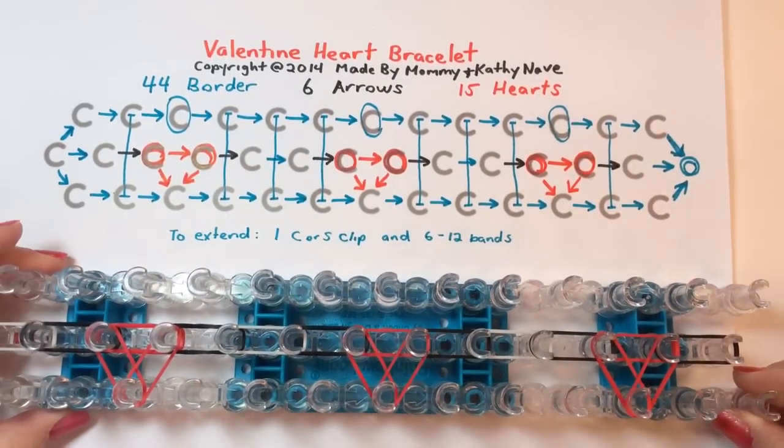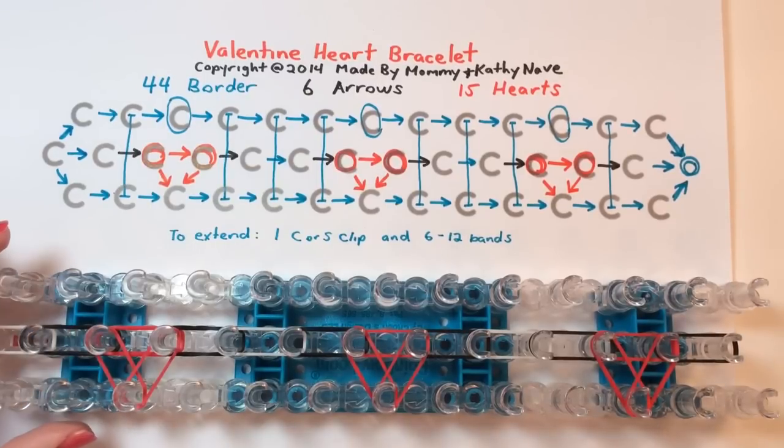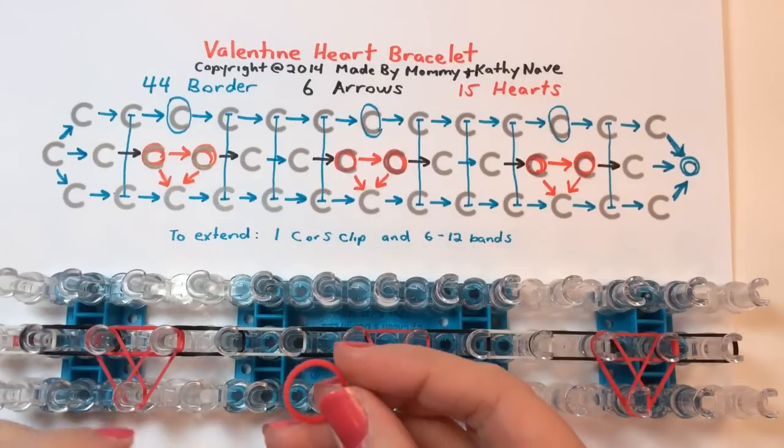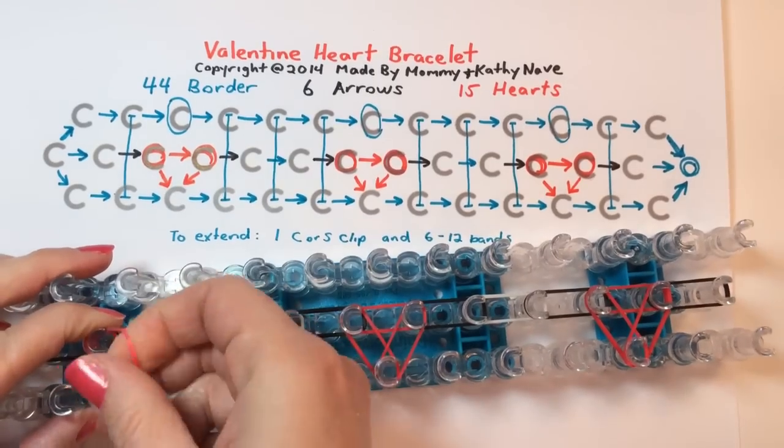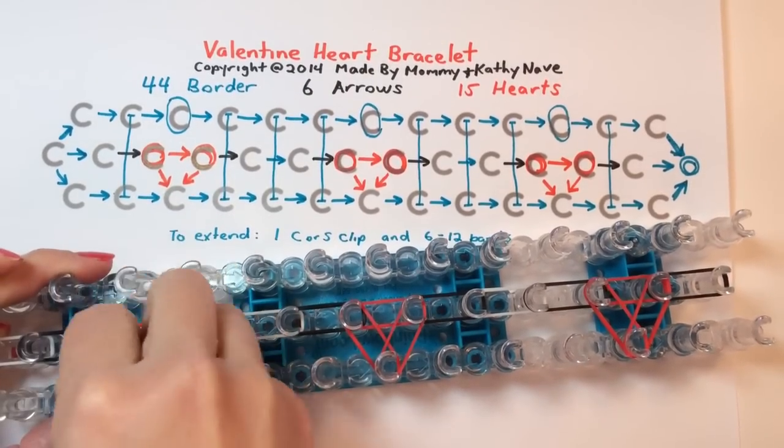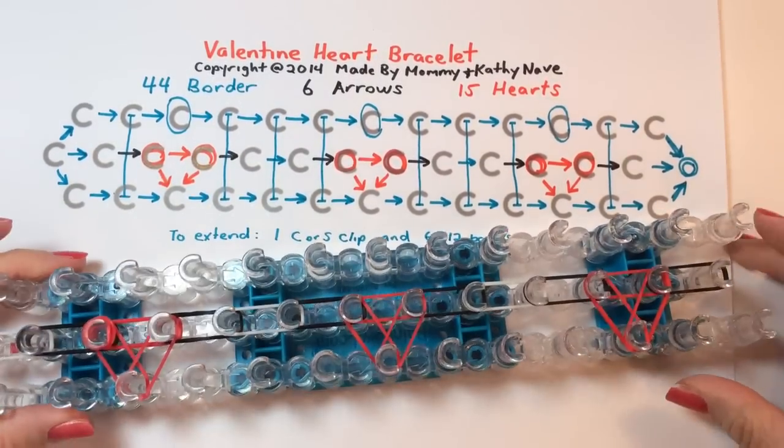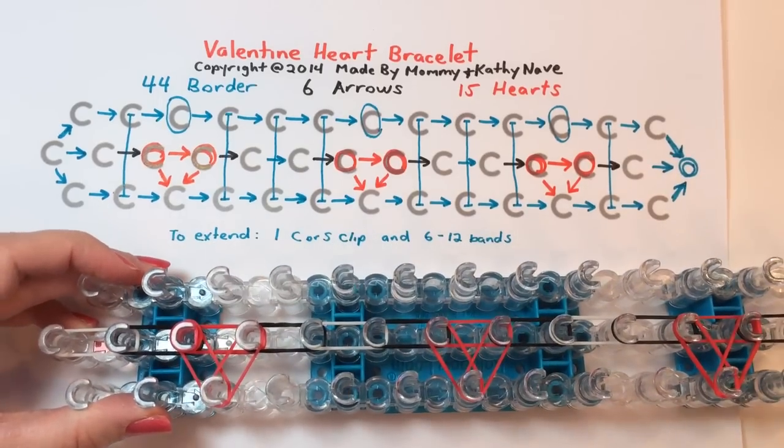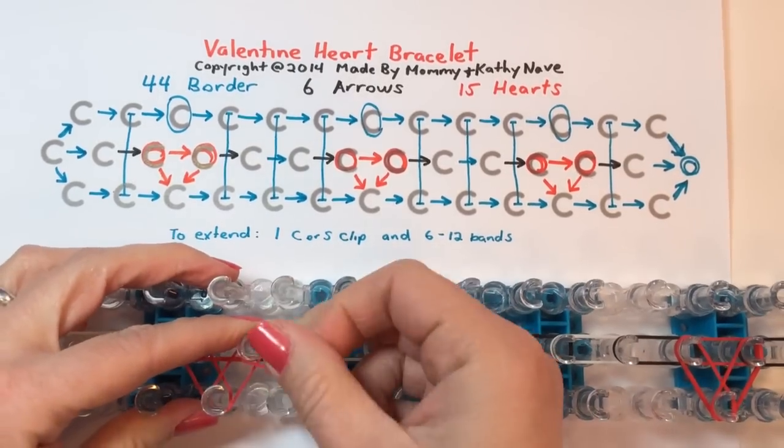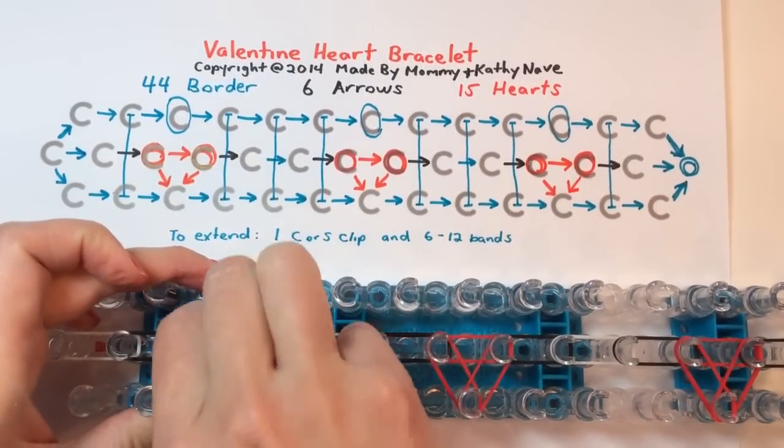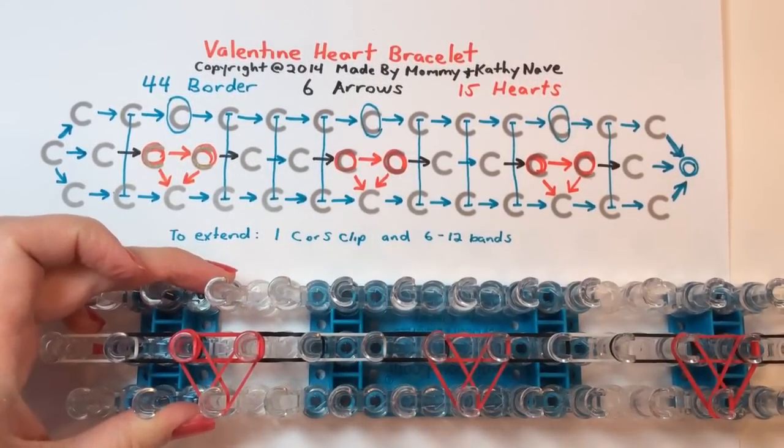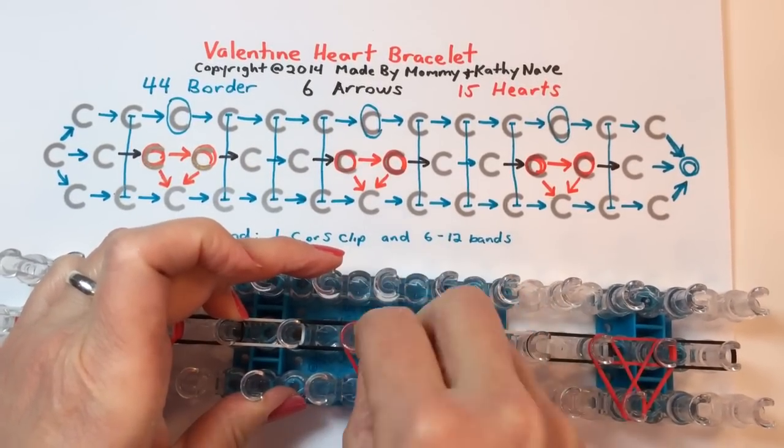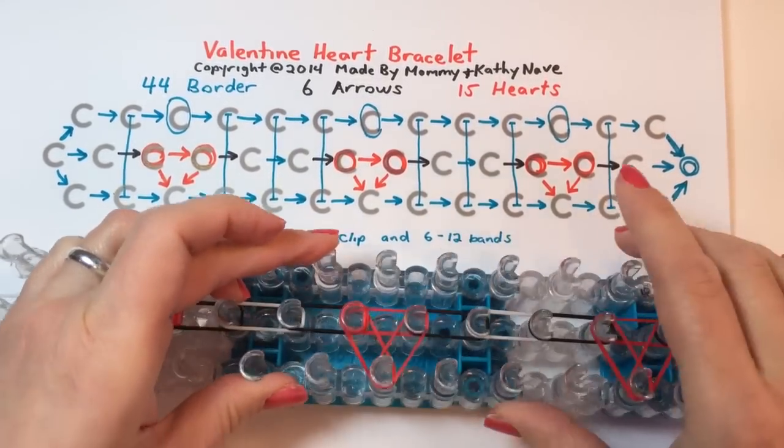And to complete our middle row, we're going to add a cap band on each corner of the hearts. You take your single rubber band, stretch, and wrap it around three times if you can. It depends on the type of rubber band you're using, whether you'll do two or three times.